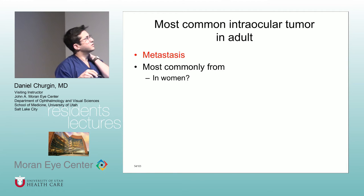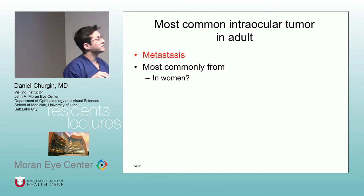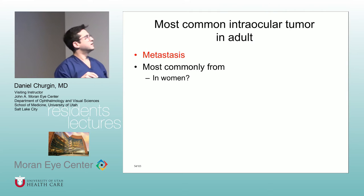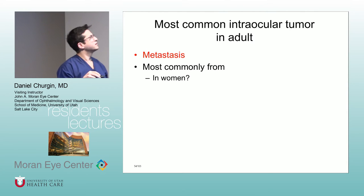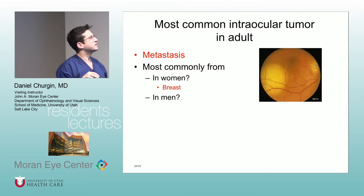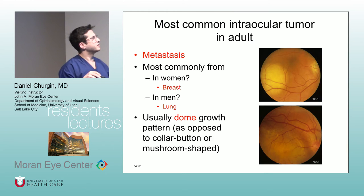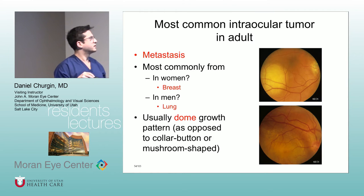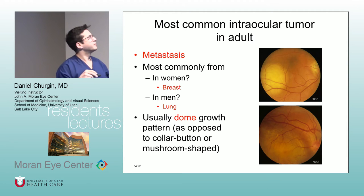Most common malignant intraocular tumor in adults is a metastasis. Most commonly from breast in women, lung in men. They usually get a dome growth pattern, as opposed to the collar button or mushroom shape in melanoma.